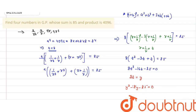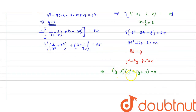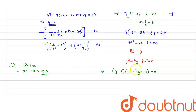Now I have this cubic equation and will solve it by factorization. Taking (y − 5) as a factor, the equation factors as (y − 5)(y² + 5y + 17) = 0. For the quadratic factor, we check the discriminant: D = b² − 4ac = 25 − 4×1×17, which is less than 0, so it gives imaginary roots. Therefore y = 5.